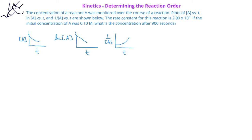In this problem, we're told that the concentration of a reactant was monitored over the course of a reaction. After obtaining concentration and time data, plots of concentration versus time, natural log of concentration versus time, and reciprocal of concentration versus time were constructed, and the results are shown below. The rate constant for this reaction is 2.90 times 10 to the negative fourth. If the initial concentration of A was 0.10 molar, what is the concentration of A after 900 seconds?